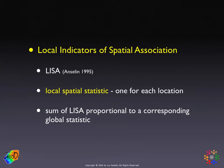More precisely, local indicators of spatial association, or LISA, involve two things. First, there is a local spatial statistic — as the name implies — meaning we have a statistic for each location. Second, there is a technical but important connection between local statistics and a global statistic: the sum of the local statistics, the sum of the LISAs, is proportional to a corresponding global statistic.